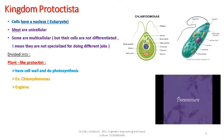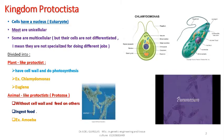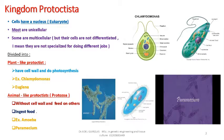Animal-like protists are also called protozoa. They have no cell wall and feed on organic matter made by other organisms, or feed on others by ingestion. Examples include Amoeba and Paramecium.